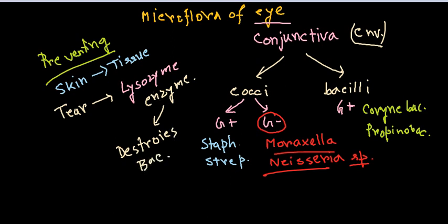Even when you are not crying, there is a conjunctival sac that constantly secretes liquid. Every time you close and open your eyes, a liquid containing lysozyme is released, killing any pathogenic microflora present. This continuous secretion is the key preventing measure against microflora in our eye.